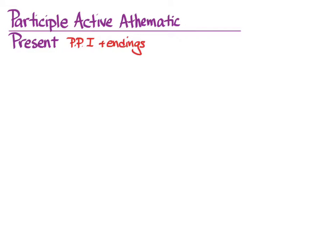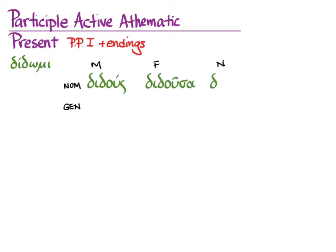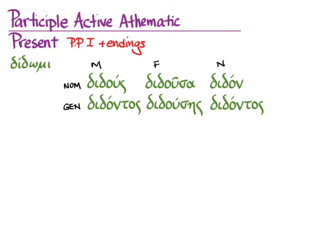Now, usually here is where I would talk about short stems or long stems, but it makes more sense simply to learn these as vocabulary words. For didomi, we're going to learn the nominative for the masculine, the feminine, and the neuter singular, and the genitive singular for all three genders, because that's how you'll know how to decline it for the rest of the paradigm. For didomi, we get didous, didousa, didon, and then in the genitive, didontos, didouses, didontos. It's that stem in the genitive that you will use to form all of the other cases, numbers, and genders.